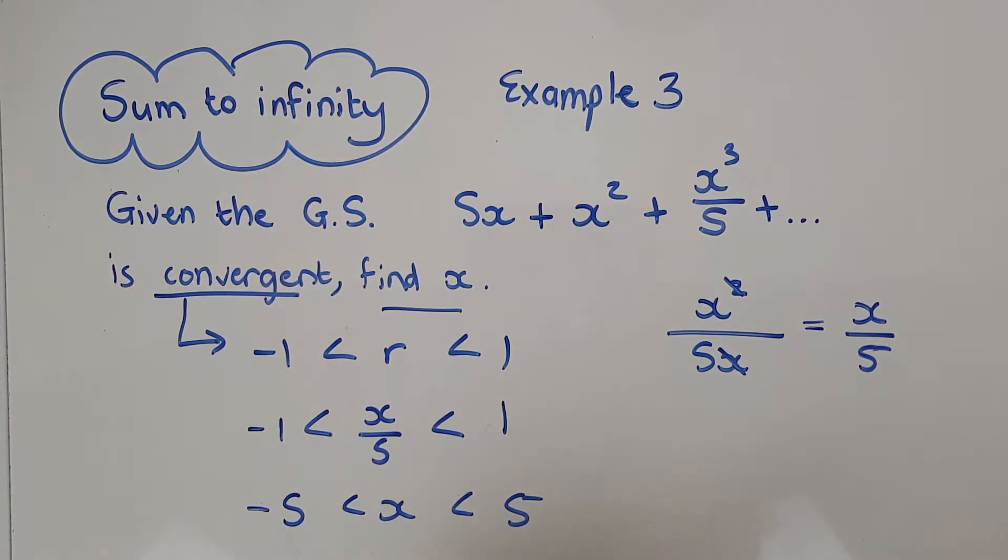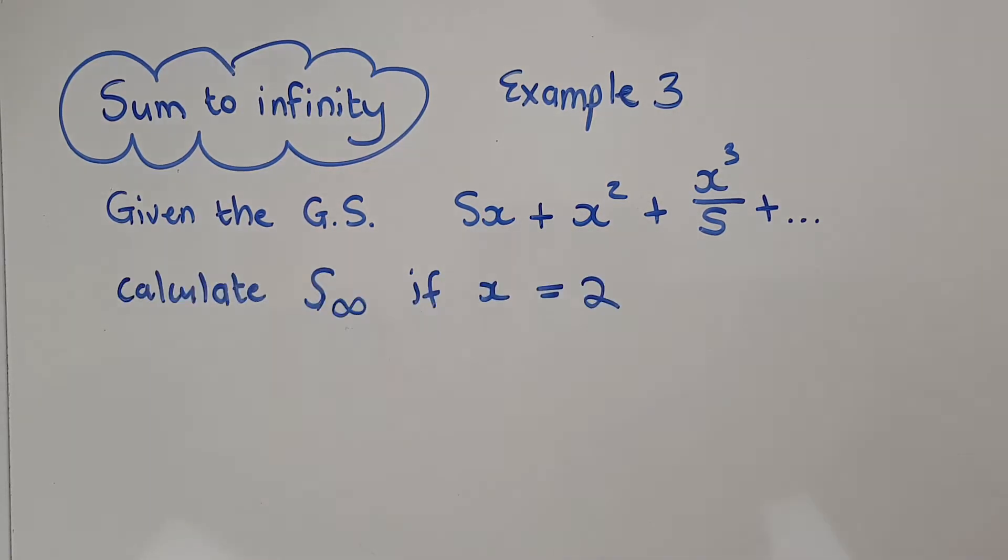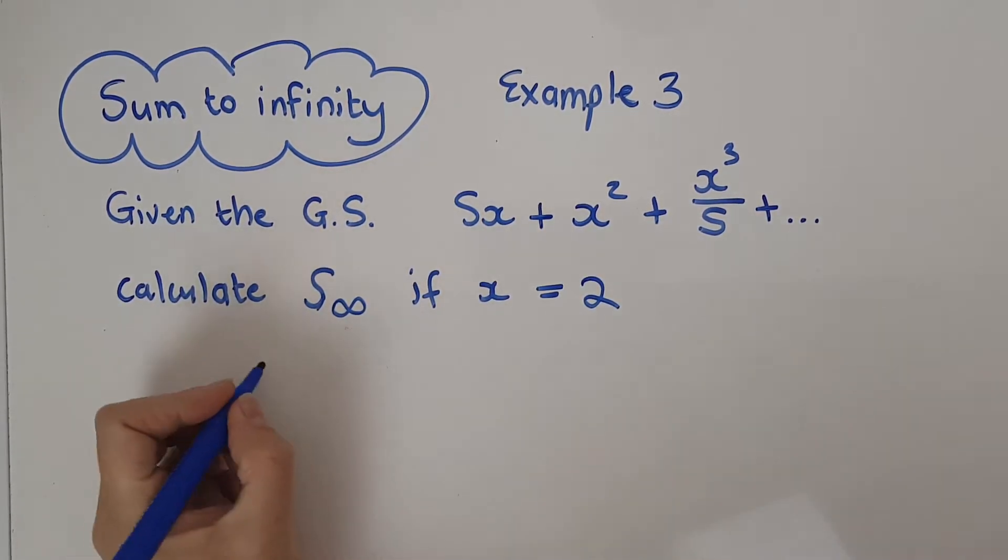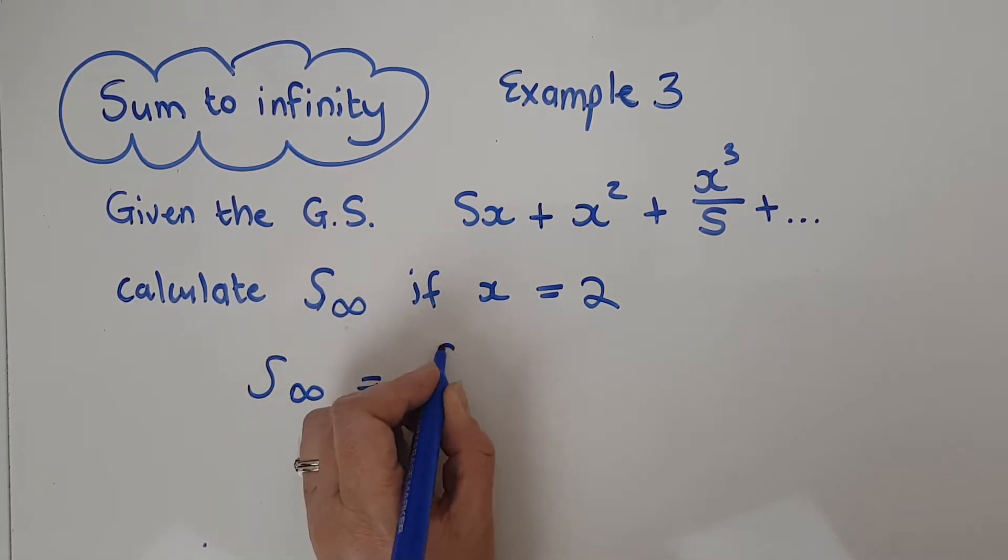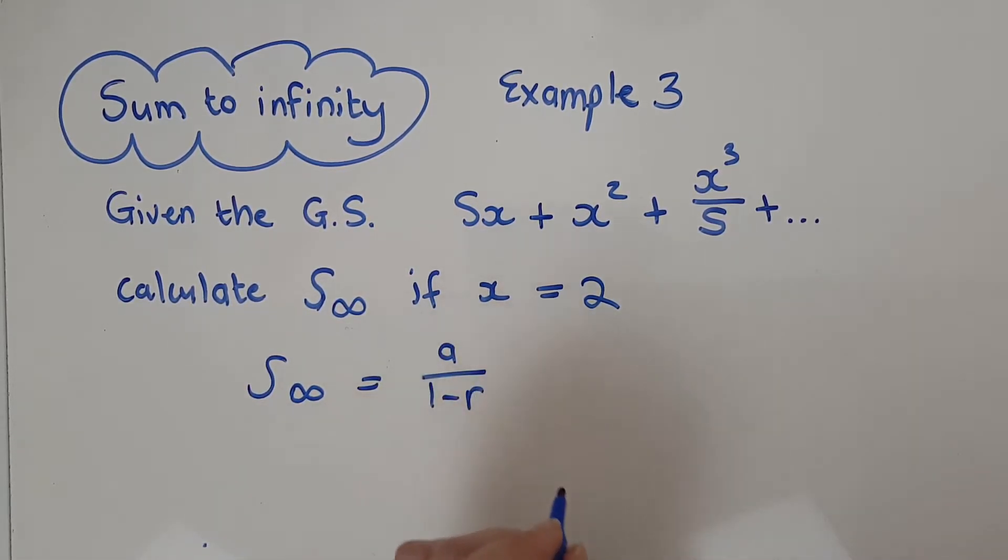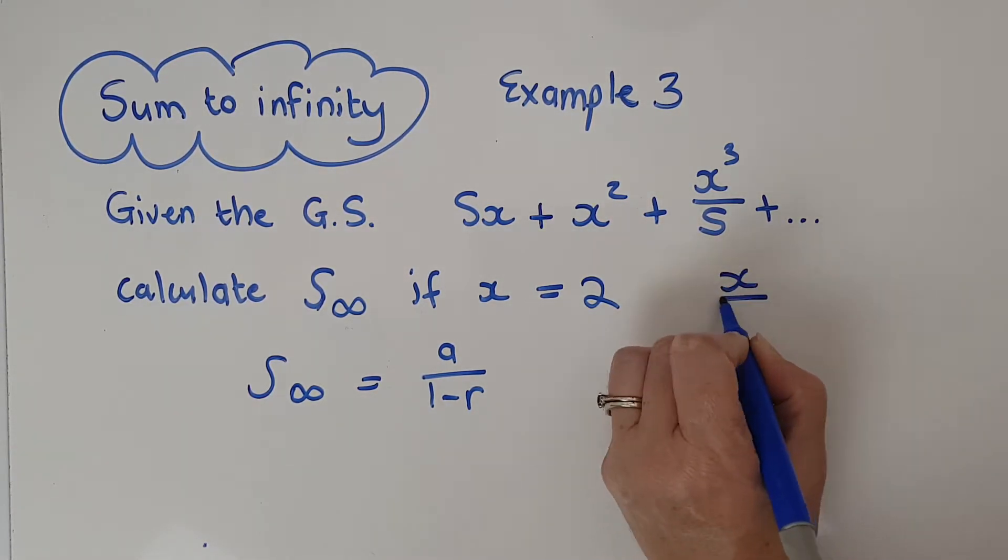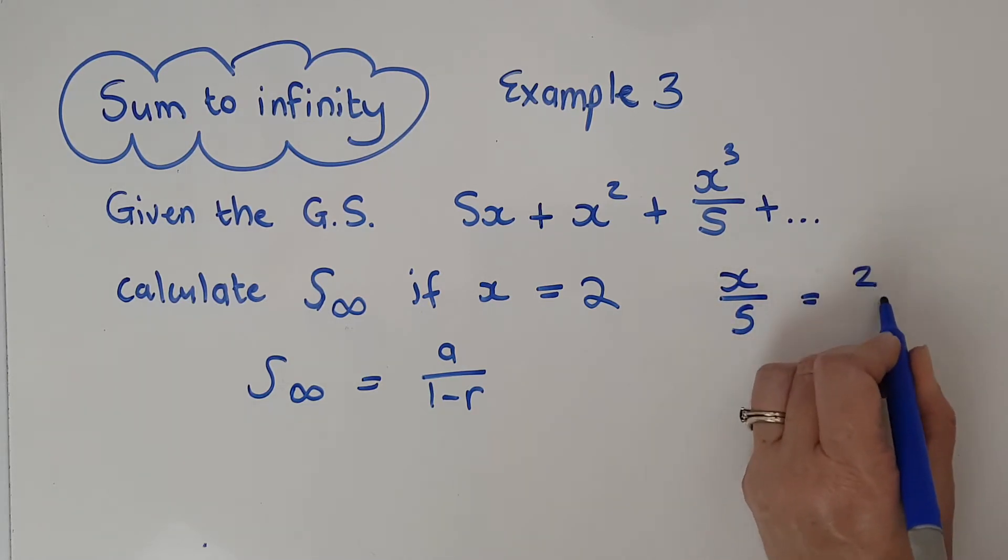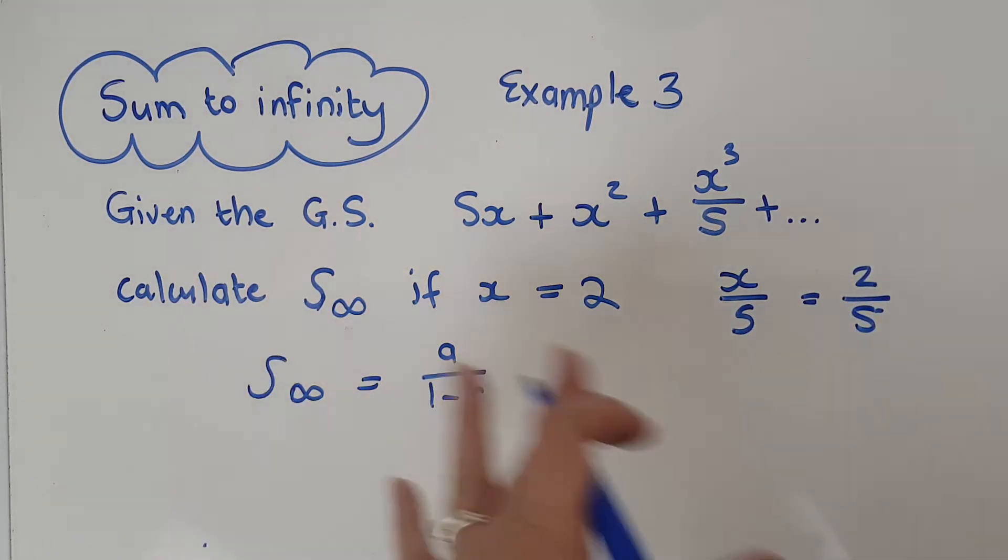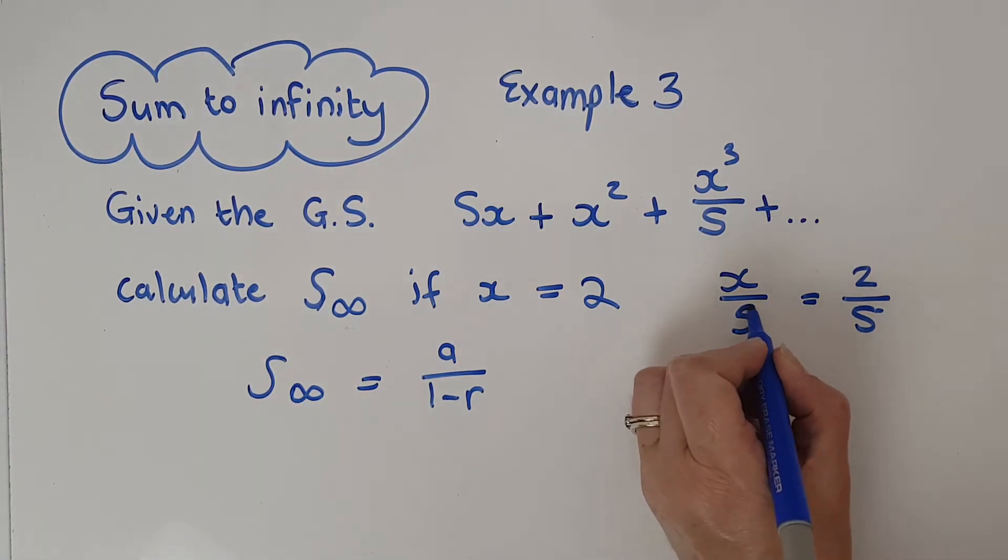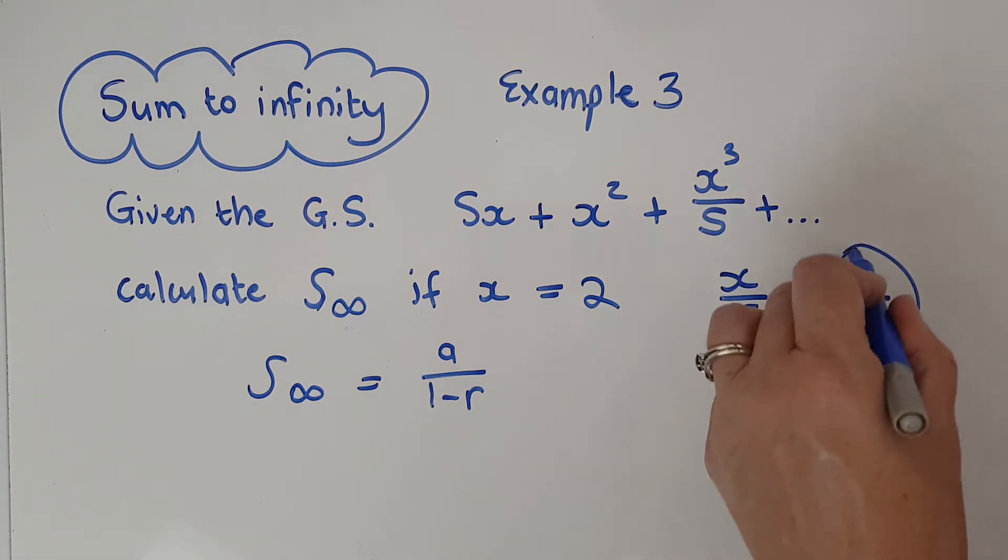But I'm dealing with a convergent thing, so what we could now do is there could be a separate question, which I'll do next, that we want the sum if x equals two. Sum to infinity is a over one minus r. My r, remember, was x over five, so x over five will now be two over five because they've given us this was the second part of the question, so you wouldn't be allowed to use it in the first part.